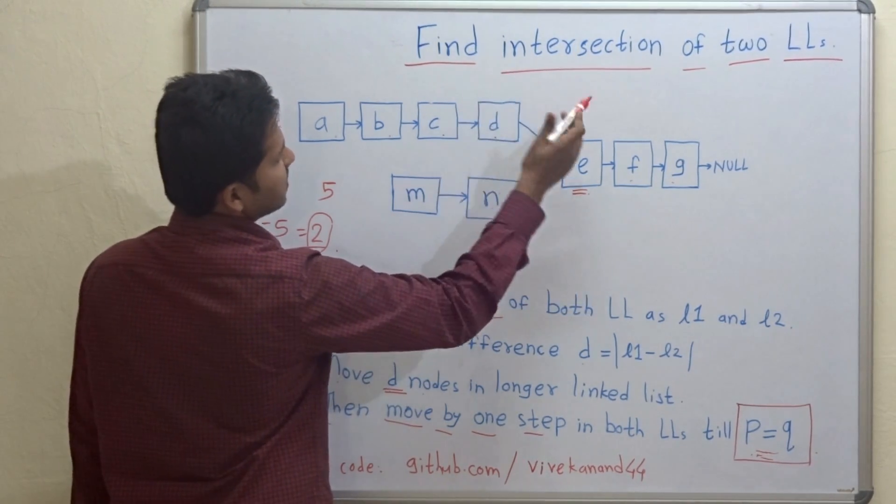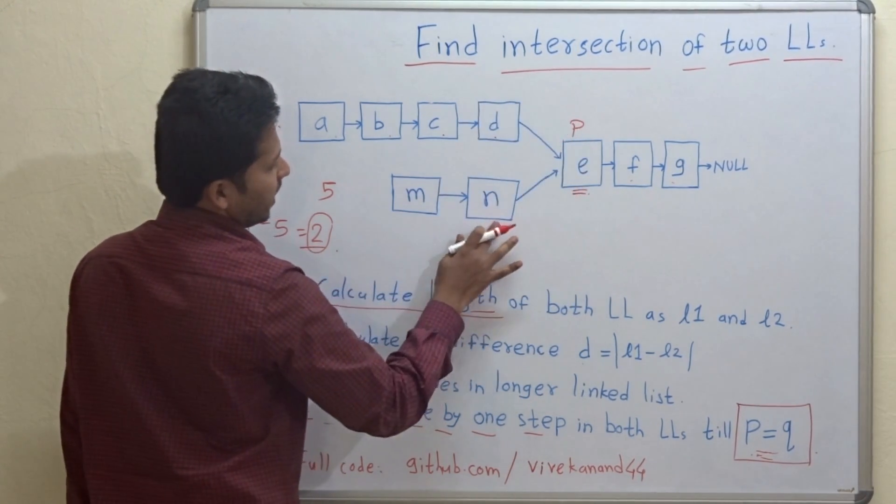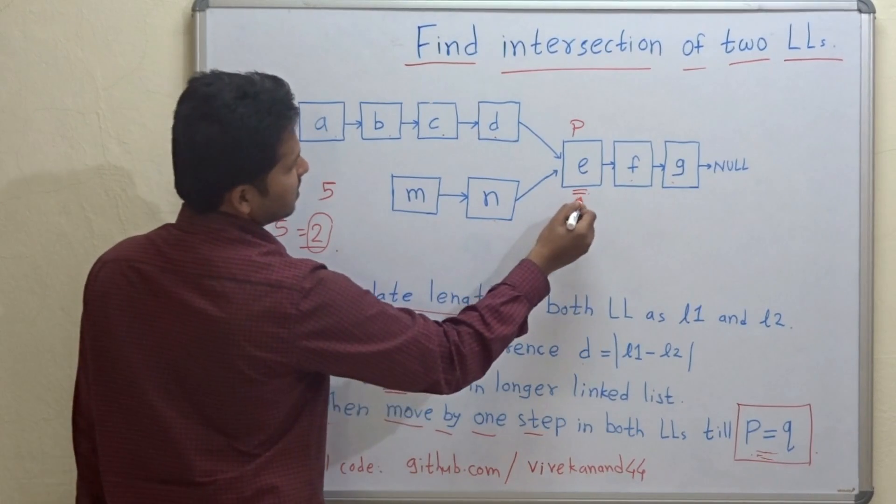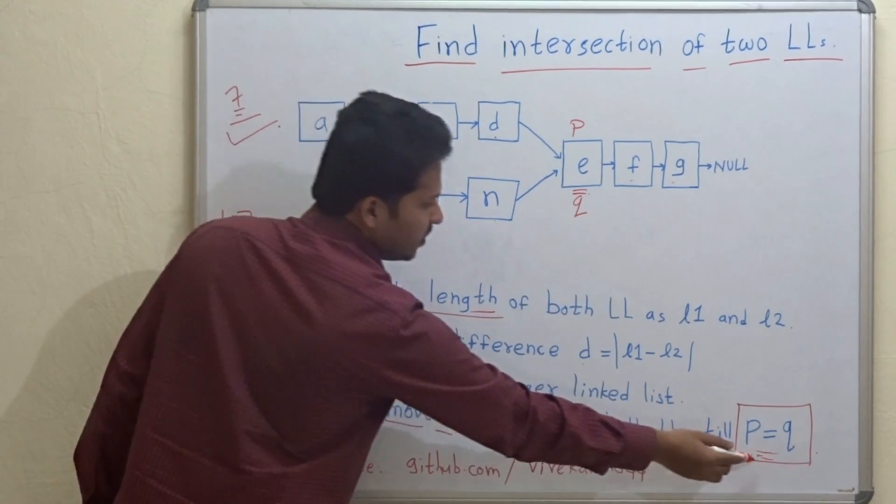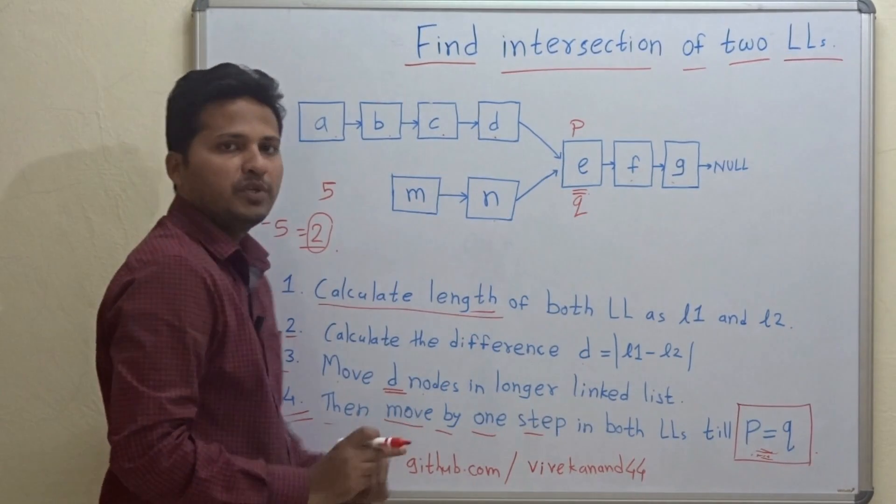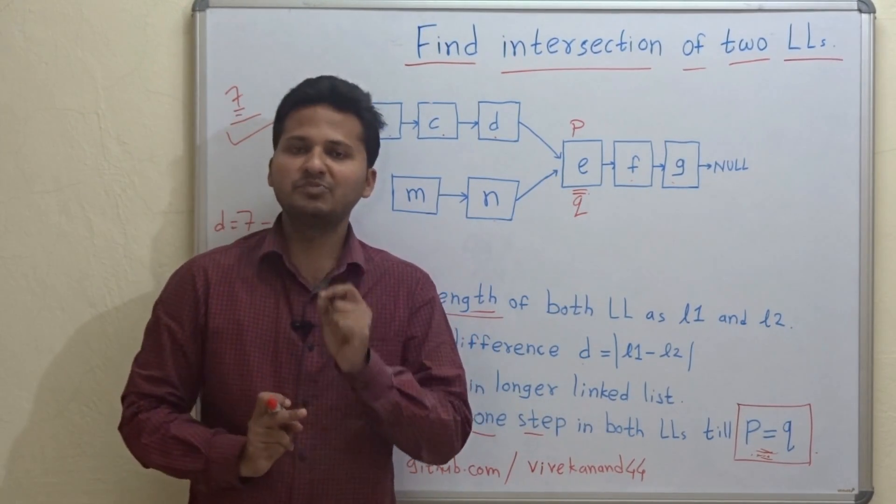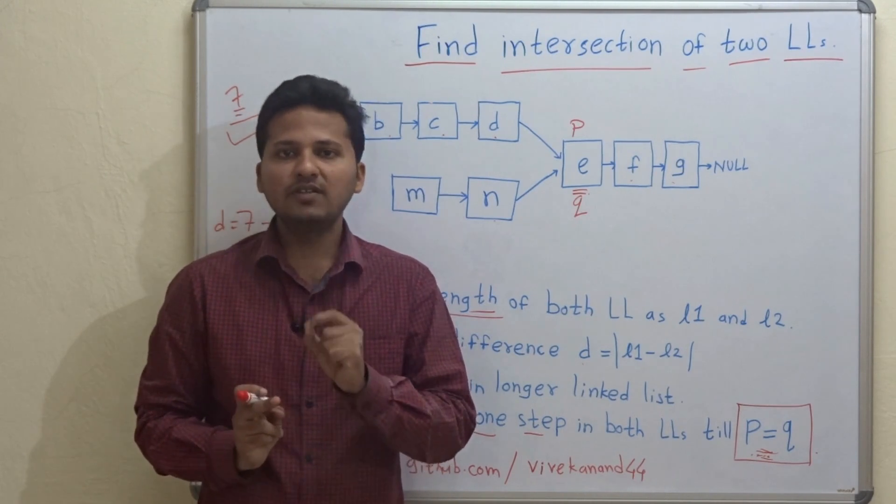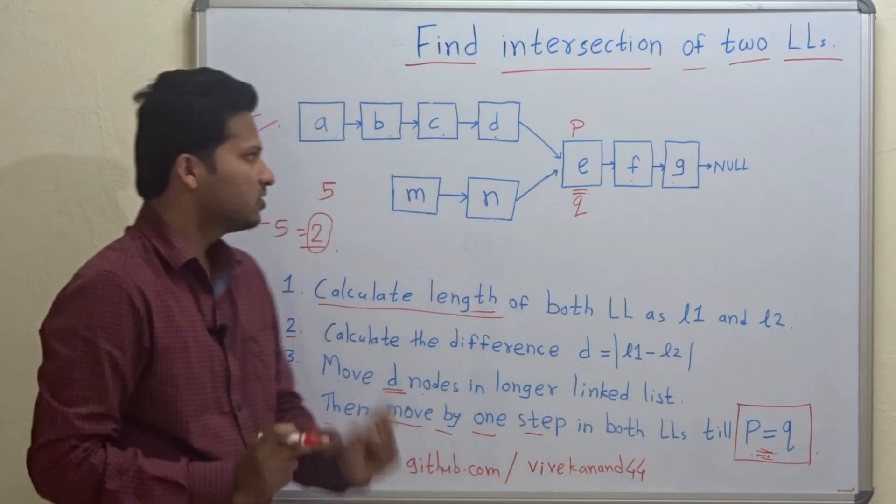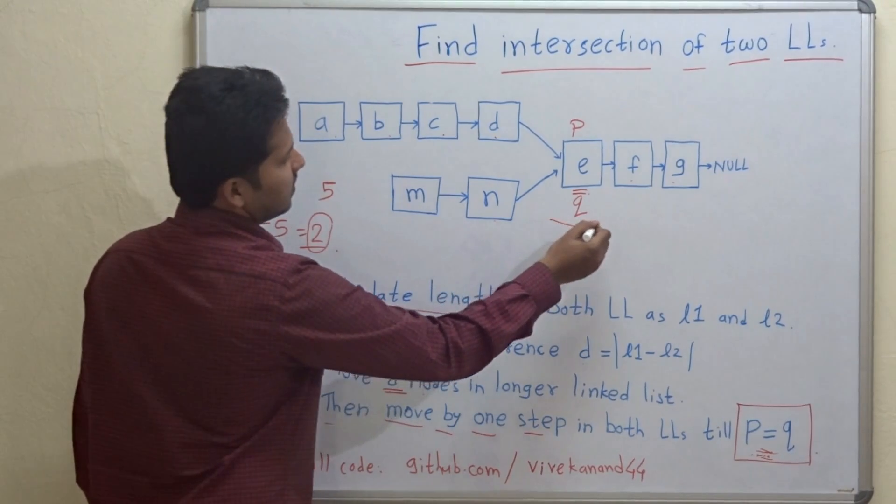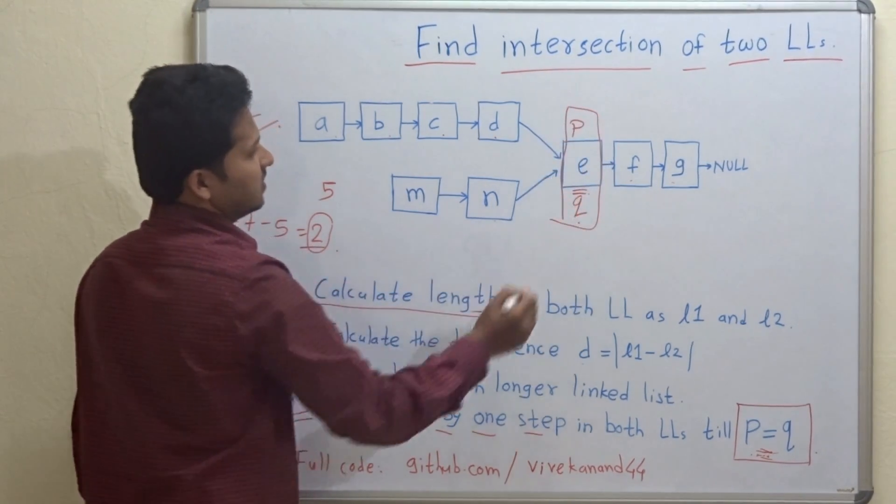P is moved by one step and Q is moved by one step. Is P equal to Q here? Yes. P and Q both hold the same address. This means they both point to the same node. So this is the intersection point of our linked list.